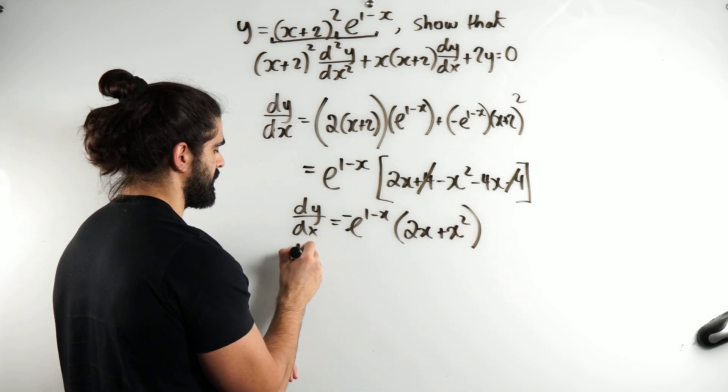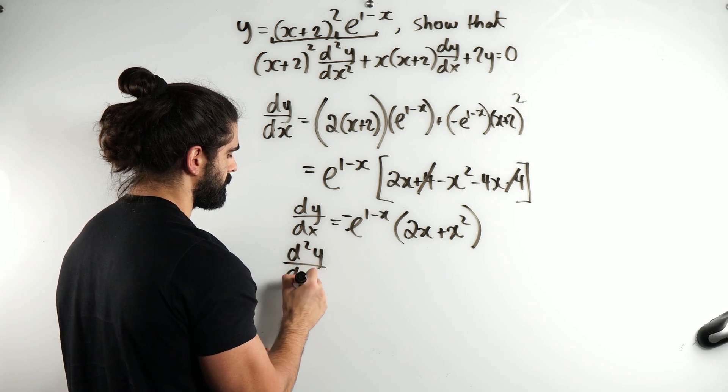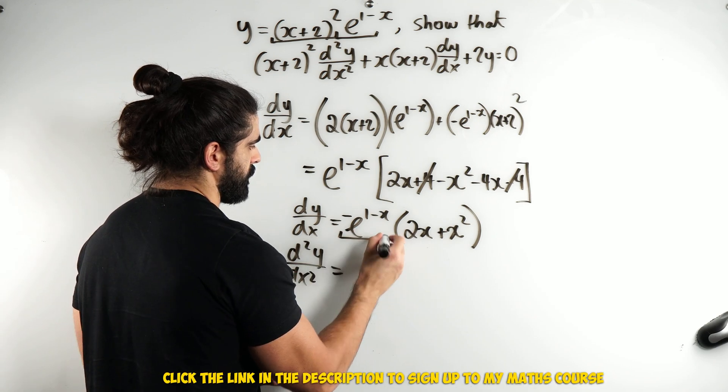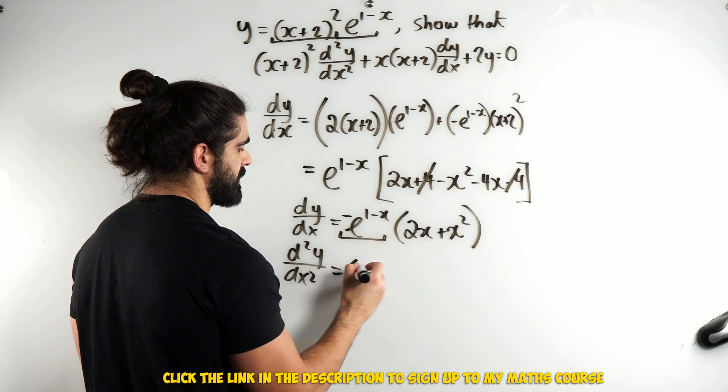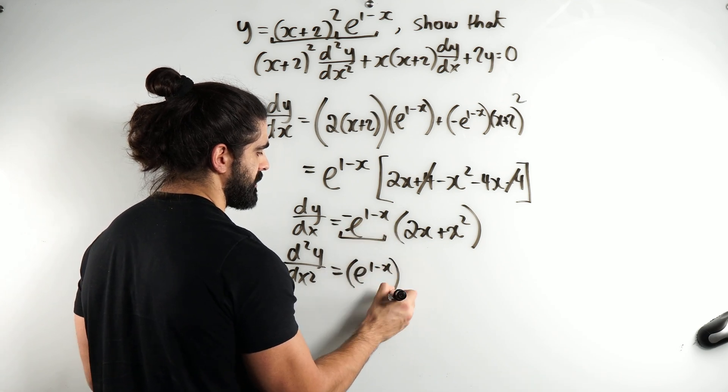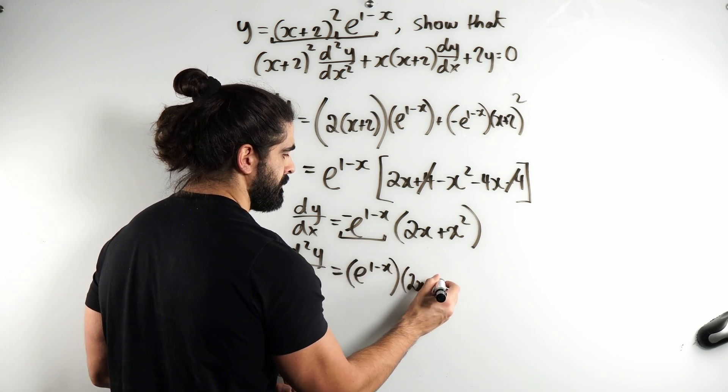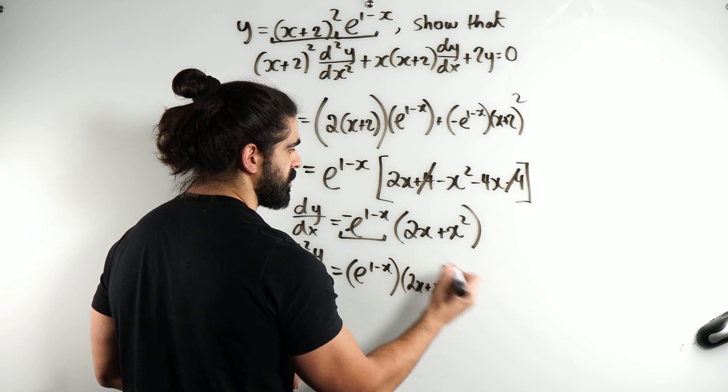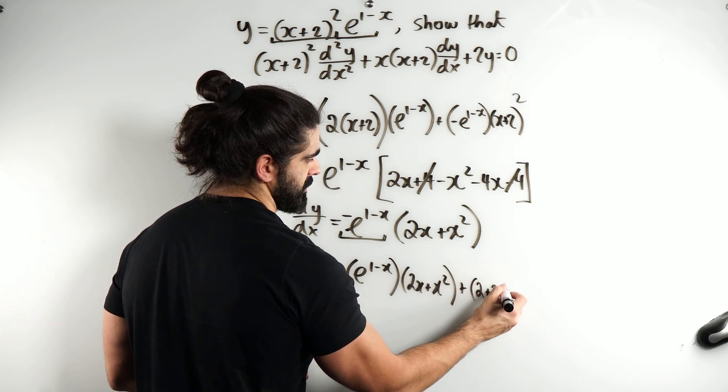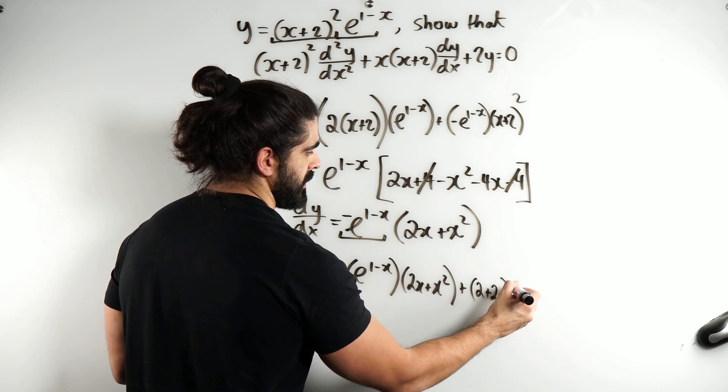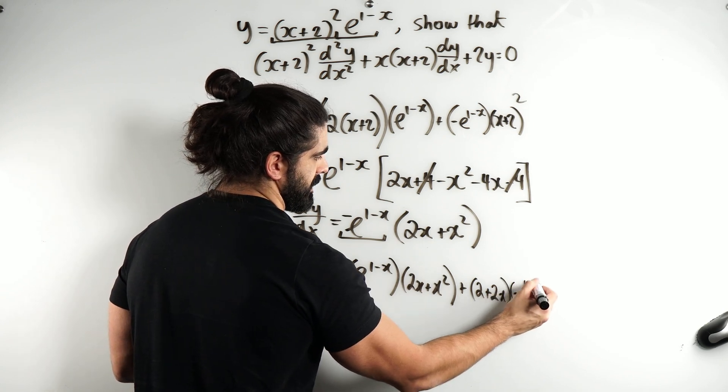Now, let's do the product rule again. Let's differentiate. Okay, differentiate the first term. Now, remember the minus comes down. It's just e to the 1 minus x times the second term plus differentiate the second term, 2 plus 2x times the first term, which is minus e to the 1 minus x.